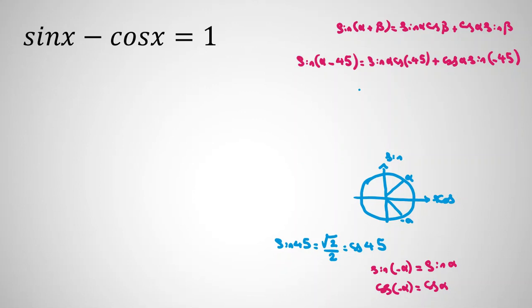So let's simplify this part. It will be sin alpha cos 45 minus cos alpha sin 45. And then you can say cos 45 is root 2 over 2 and sin 45 root 2 over 2. It will be sin alpha minus cos alpha.